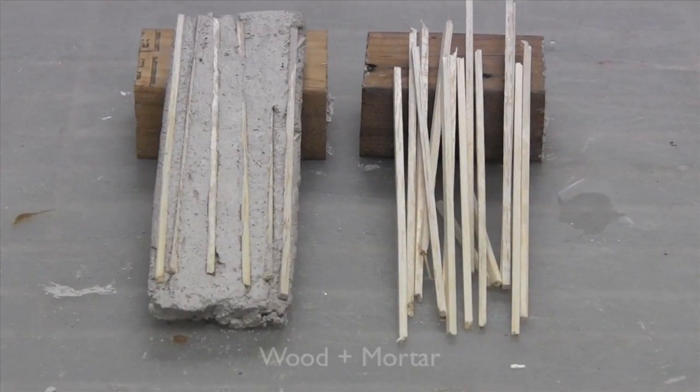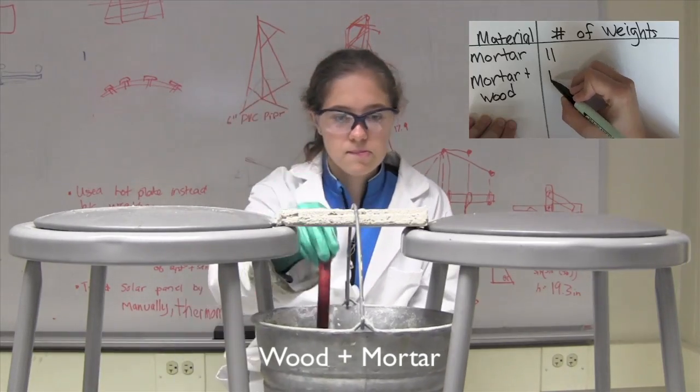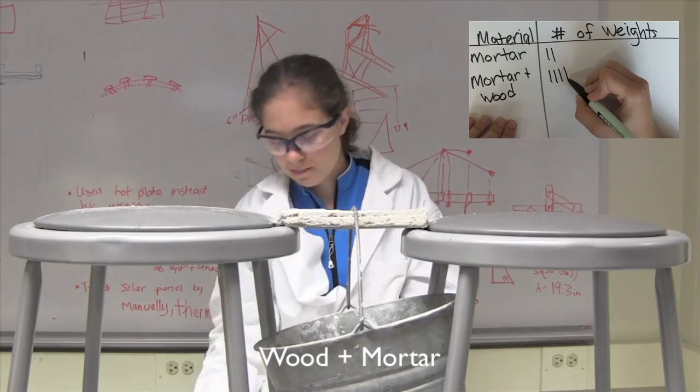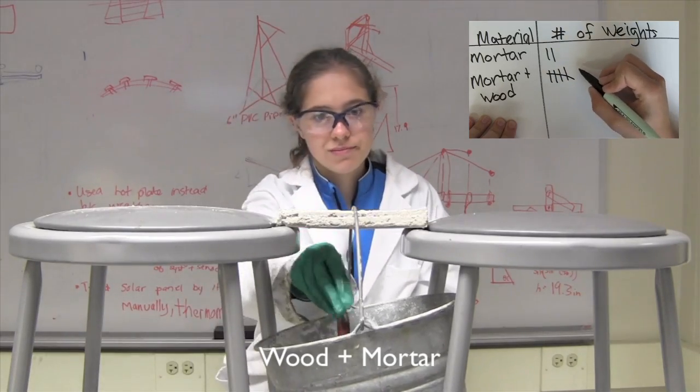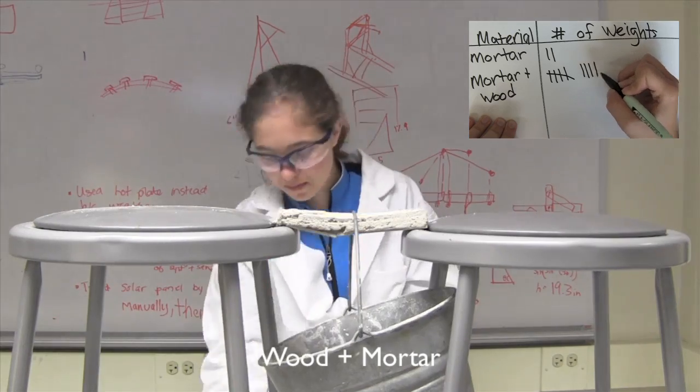Let's test them. We saw for the wall that was made of just mortar, it broke very quickly. Let's see what happens for the one with balsa wood. As we can see, the wall with the balsa wood is taking more weight to break than just the mortar did. But it isn't bending like the balsa wood did when we tested it by itself.